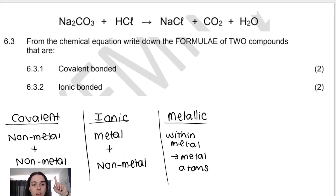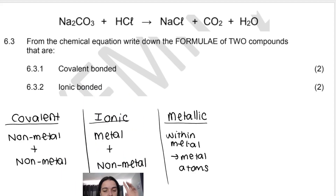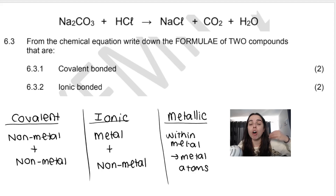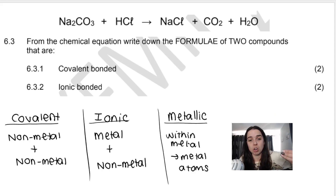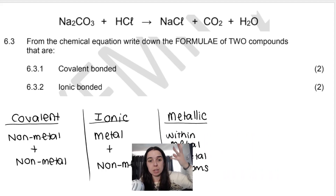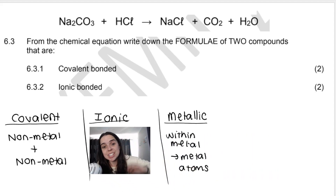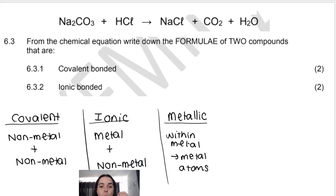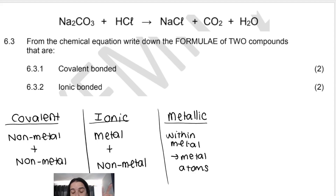Remember, a metal bonding with a non-metal is not the formal definition for ionic bonding. The formal definition is the transfer of electrons from a metal to a non-metal to form a formula unit. There's a formal definition sheet where you can access these definitions, but we can recognize if it's covalent or ionic by using this method.